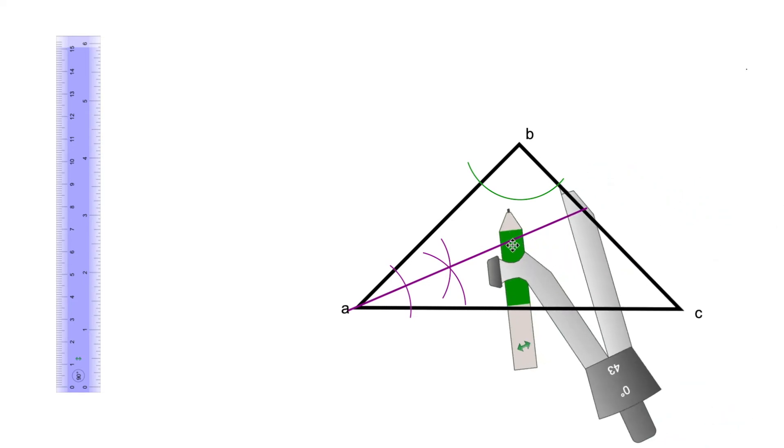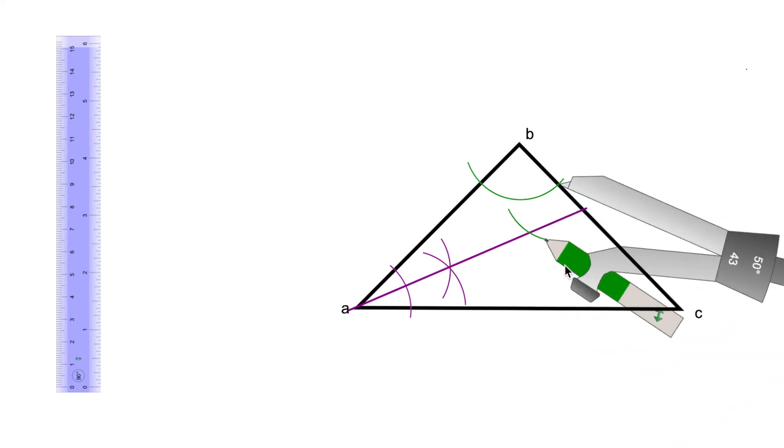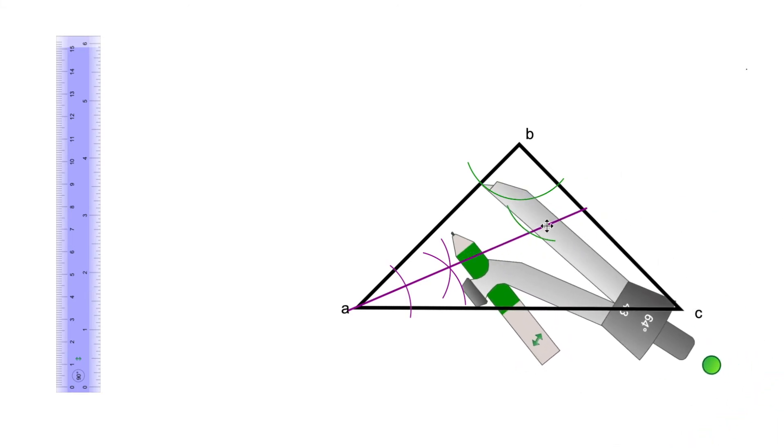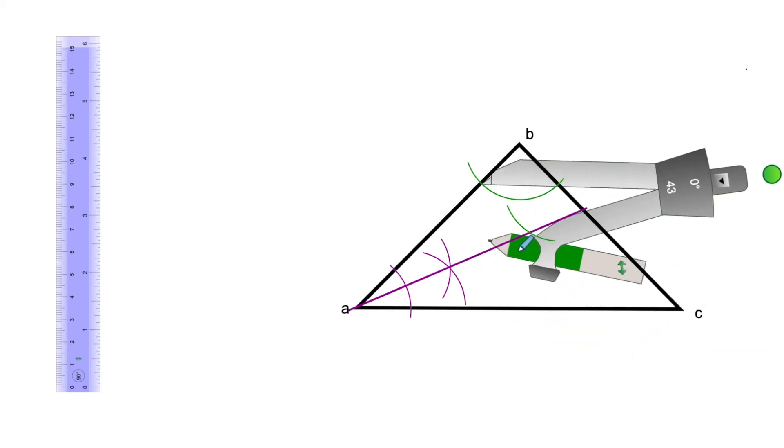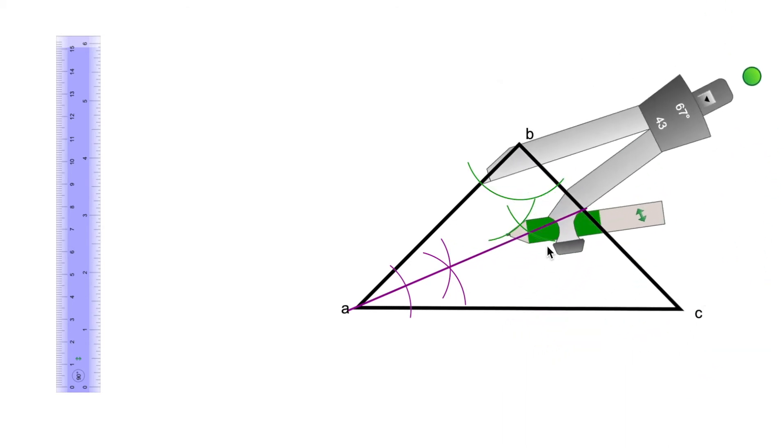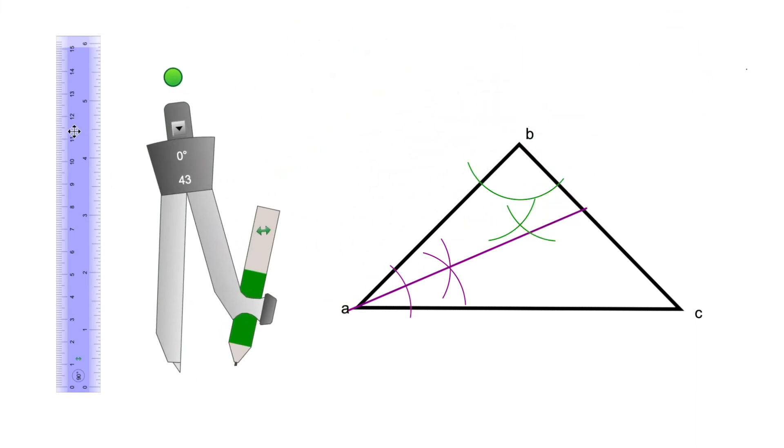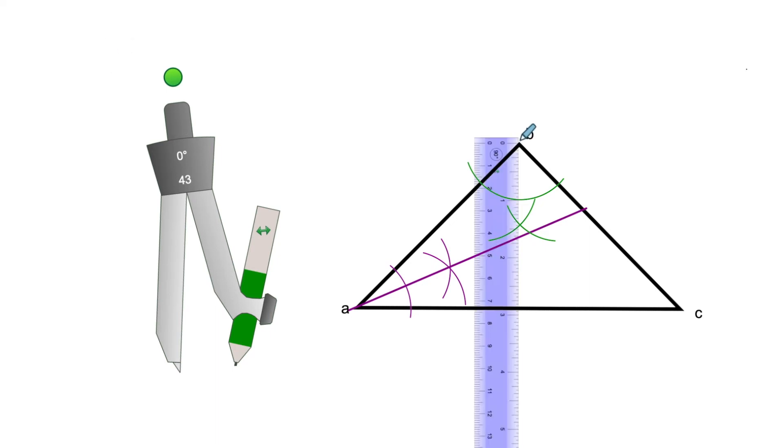I'll put it in one of the intersections I just made and draw an arc. With the same radius, I'll put it in the other intersection point and draw another arc. Those two arcs will give us a point that I'll match with point B, and that is the bisector of angle B.